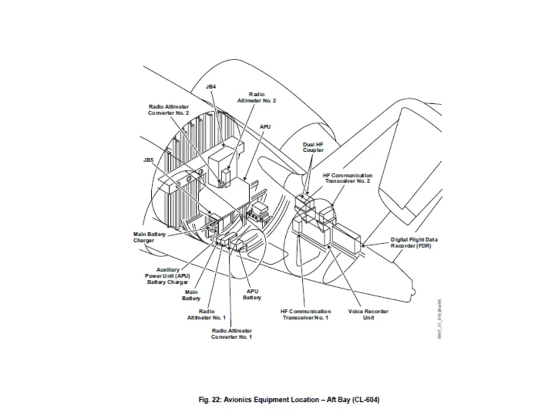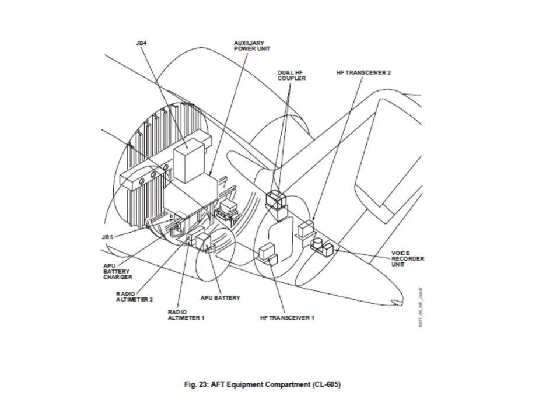The aft equipment bay is a non-pressurised part and contains the APU bay. This picture shows various avionic LRUs including the main battery and APU battery for the 604. Remember, the main battery on the 605 has been moved forward to the forward electrical bay. Access to this compartment is through an access hatch on the bottom of the fuselage that drops down on a hinge. Also located in here are the air conditioning packs and number one and two hydraulic system components. On the 605 the big difference is the main battery has been removed and relocated, and HF1 and HF2 are now on the left and right hand sides respectively rather than both on the same side. You can also see the 605's rounded tail section shape.